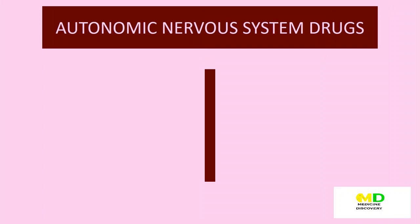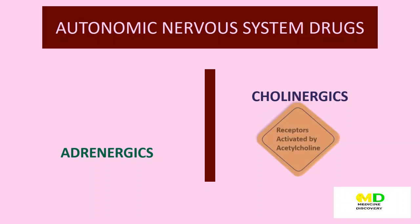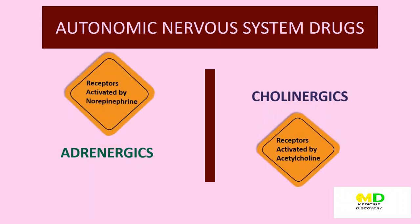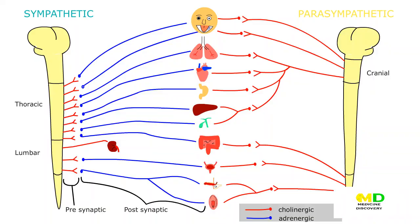Cholinergics activate receptors by acetylcholine neurotransmitters, while adrenergics activate receptors by norepinephrine neurotransmitters. Before we jump into the drugs directly, let's understand a little more about the cholinergic neurons and cholinergic receptors. The pre-synaptic neurons of both parasympathetic and sympathetic, and the post-synaptic neurons of the parasympathetic division, use acetylcholine as a neurotransmitter. The post-synaptic sympathetic division of sweat glands also uses acetylcholine. In addition, cholinergic neurons innervate the muscles of the somatic system and play an important role in the central nervous system.